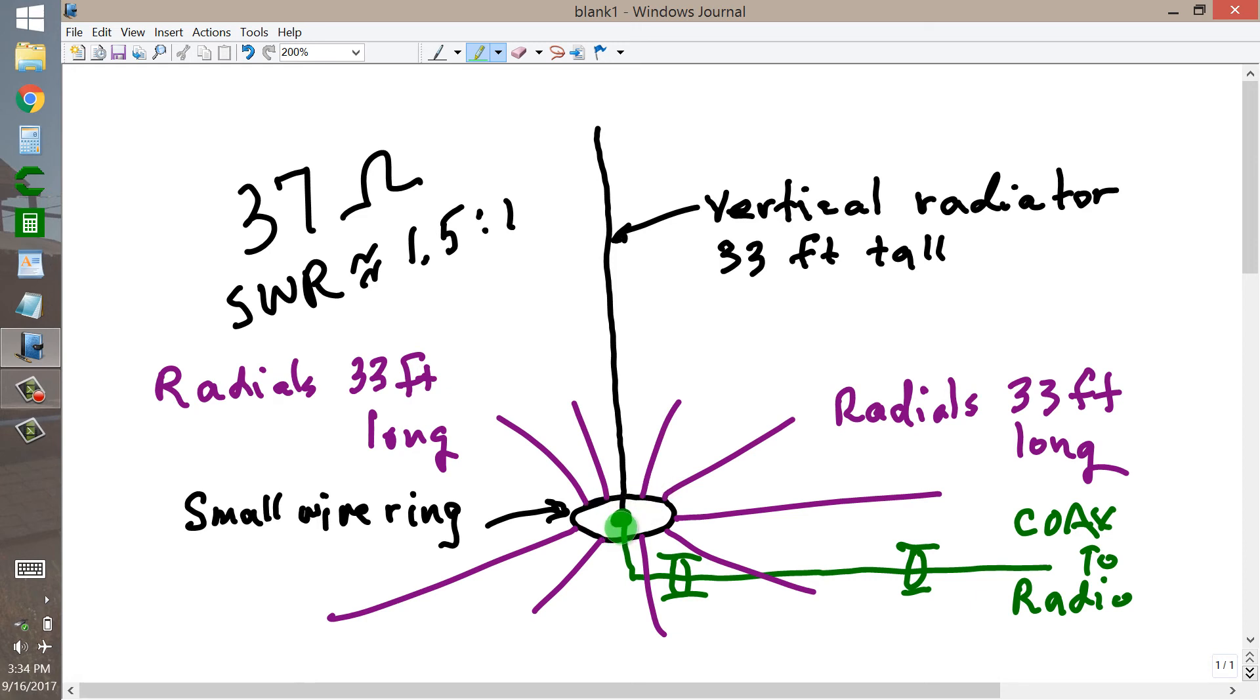But if you can get this thing up as high as you can manage above the ground, make as many radials as possible, 33 feet long, you might make them somewhat drooping, in which case you would increase this feed point impedance and lower your standing wave ratio a little bit. But it would still constitute a ground plane antenna for 40 meters.